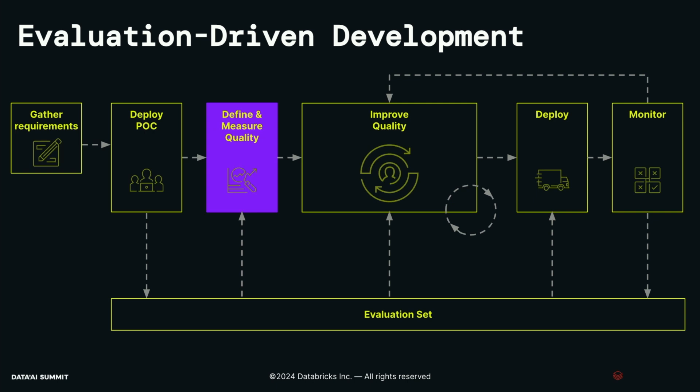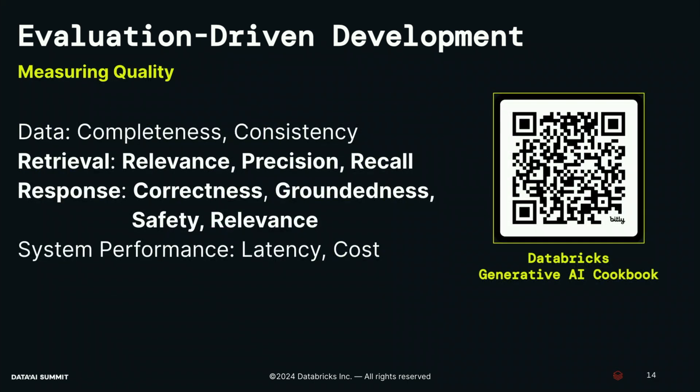With the evaluation set in place, let's talk about defining and measuring quality. Every component in that RAG diagram could have some particular metric attached to it. For example, with data: how complete is it, how well does it capture your scenario? The intent of a RAG system is to retrieve relevant documents — if you have no relevant documents, the quality of that corpus is probably not up to snuff. There are also elements in the RAG chain: retrieval quality, response quality, and traditional system performance metrics like latency and cost. I'll focus primarily on retrieval and response quality here.